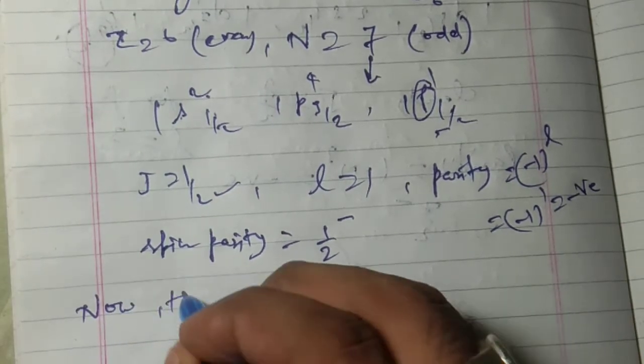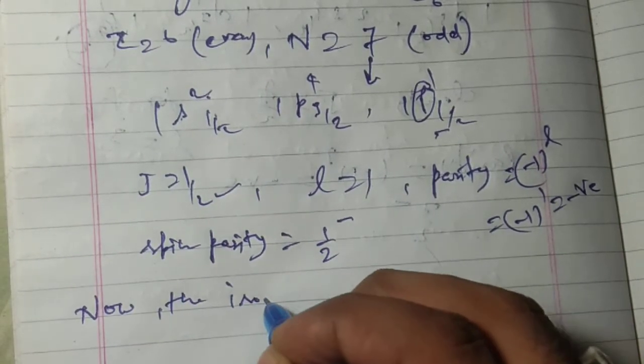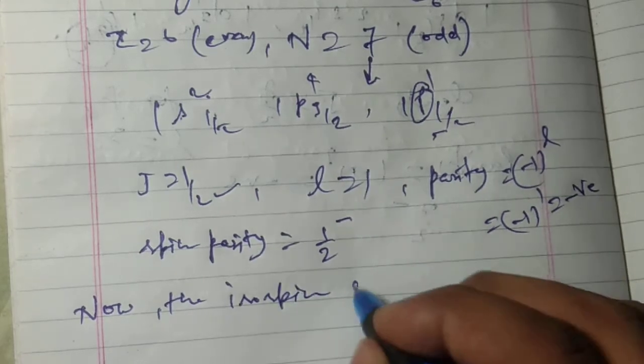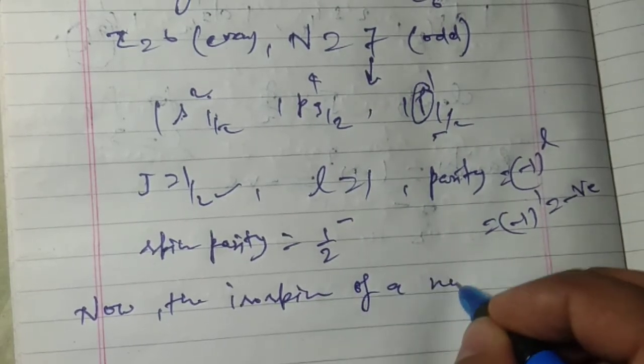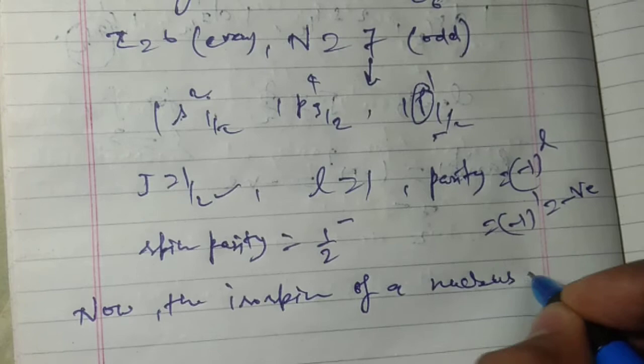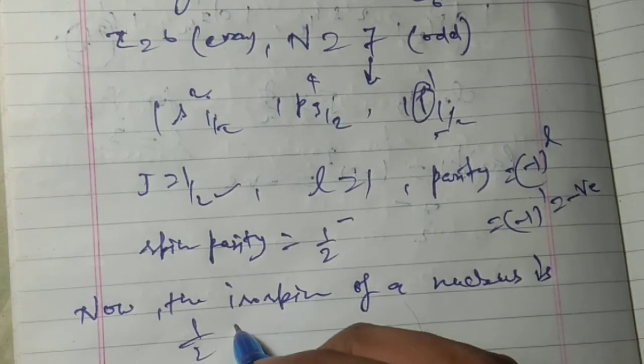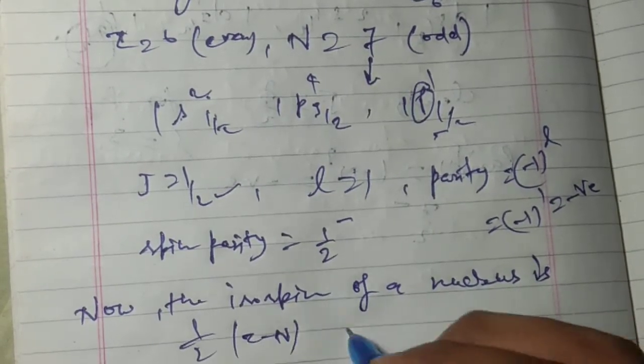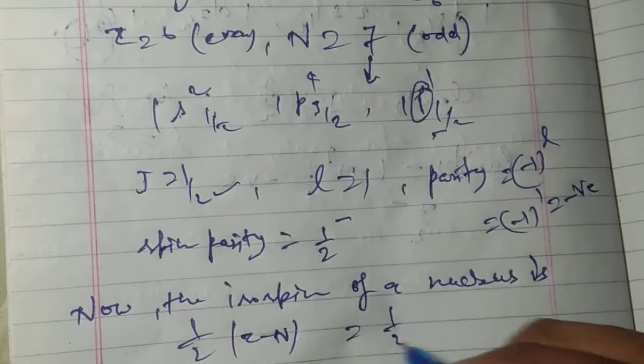Now the isospin of a nucleus is I = 1/2 |Z - N|, and this equals